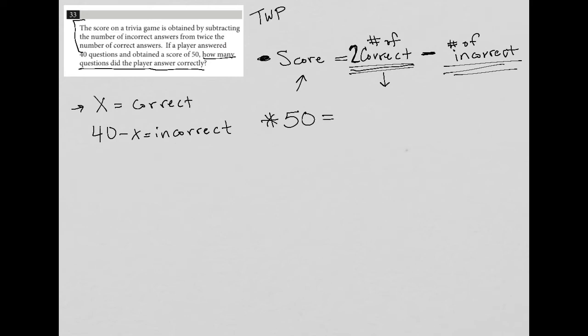Now, because the total number of questions answered is 40, if there are X correct questions, there must be 40 minus X incorrect. For instance, if the player answered 10 correct, then there were 30 incorrect. So let's put this in.